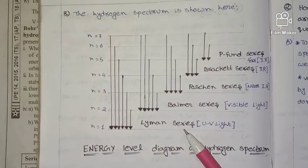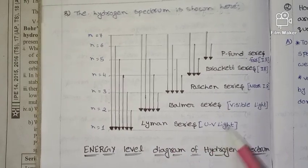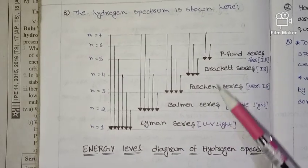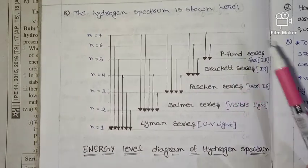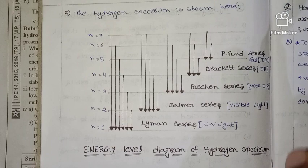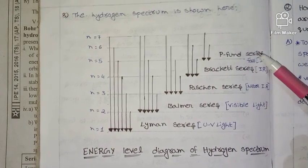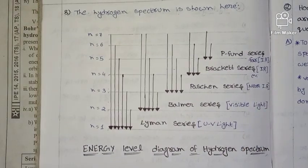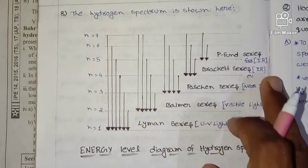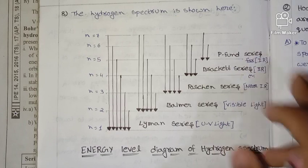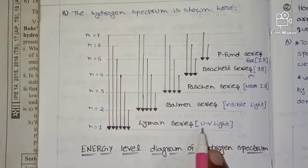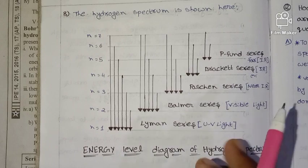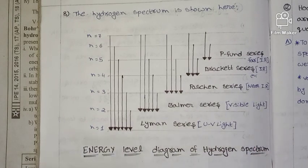The series are: Lyman series in the UV region; Balmer series in the visible region; Paschen series, Brackett series, and Pfund series in the infrared region — near IR, middle IR, and far IR respectively.